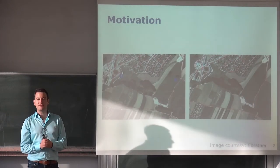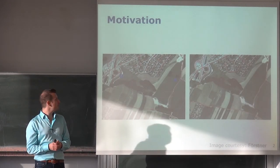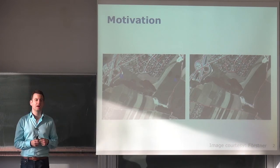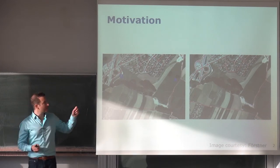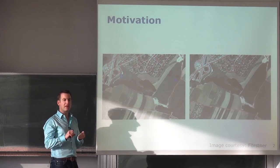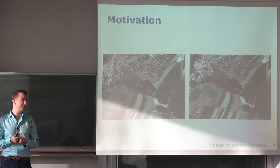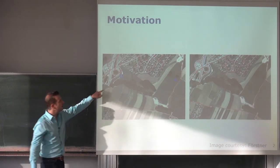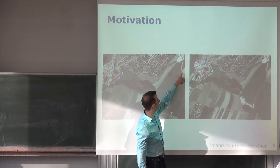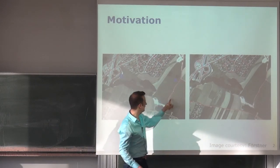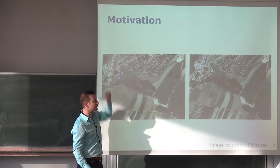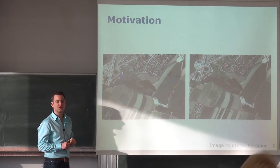A typical effect you have with aerial images is that if you have a trajectory and try to overlay the aerial image with this trajectory, you end up getting mismatches. In some areas the trajectory fits the street very well, but in some areas there is substantial deviation.